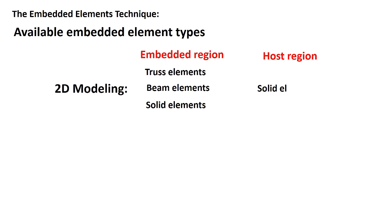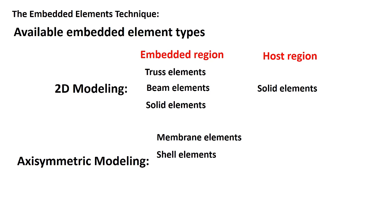In two-dimensional modeling, the embedded meshes could be truss, beam, or solid elements, while the host meshes are solid elements. In axisymmetric modeling, the embedded meshes could be membrane, shell, surface, or solid elements, while the host meshes are solid elements. Please note that these two types are only available in Abacus standard.